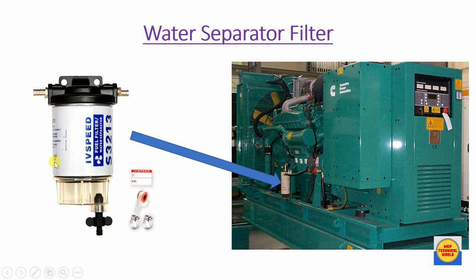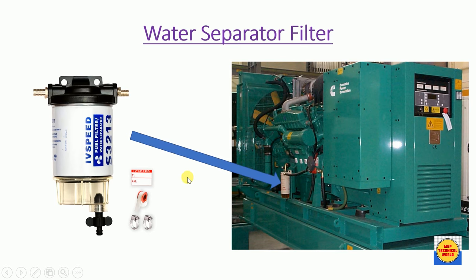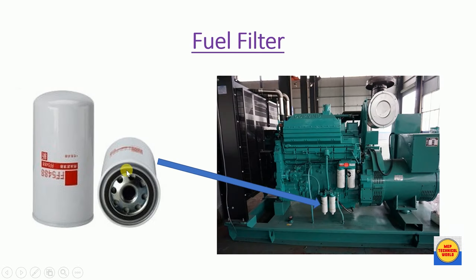Next is the water separator filter. It is fitted inside the generator and separates mixed water from the fuel. The separated fuel is then passed to the fuel filter. The collected water can be drained using a valve. This increases the efficiency and lifespan of the diesel engine.